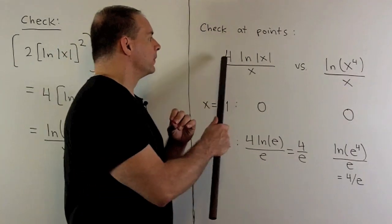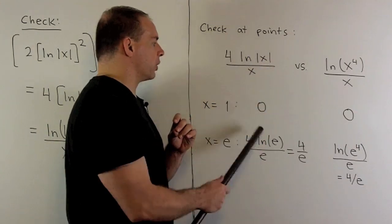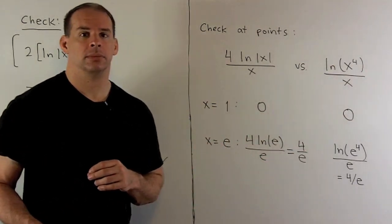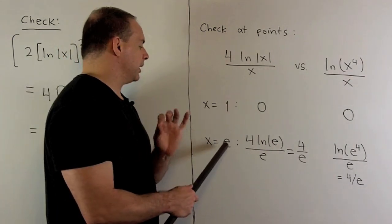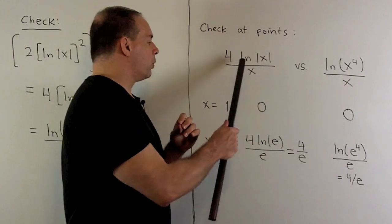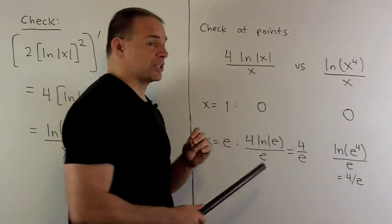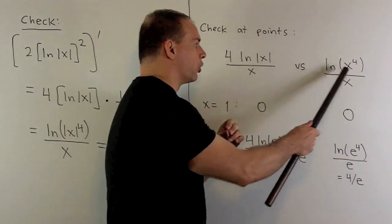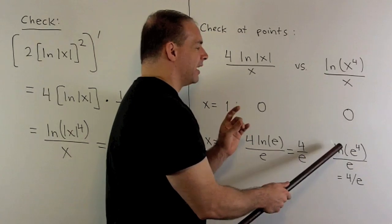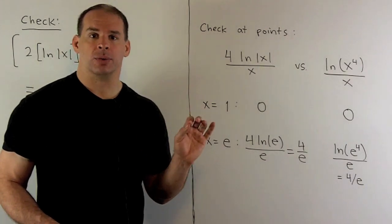For instance, if I put x equals 1 into both, natural log of 1 is 0 divided by 1, so this turns to 0. On the other side, natural log of 1 is also 0, so we get 0 as well. Another point I could try is x equals e. Here I wind up with 4 times natural log of e over e, which is just 4 over e because natural log of e equals 1. On the other side with our integrand, I have natural log of e to the 4th divided by e. I use the exponent rule to bring the 4 down, natural log of e equals 1, and again I get 4 over e. You can keep doing this with other good points, which would be powers of e.